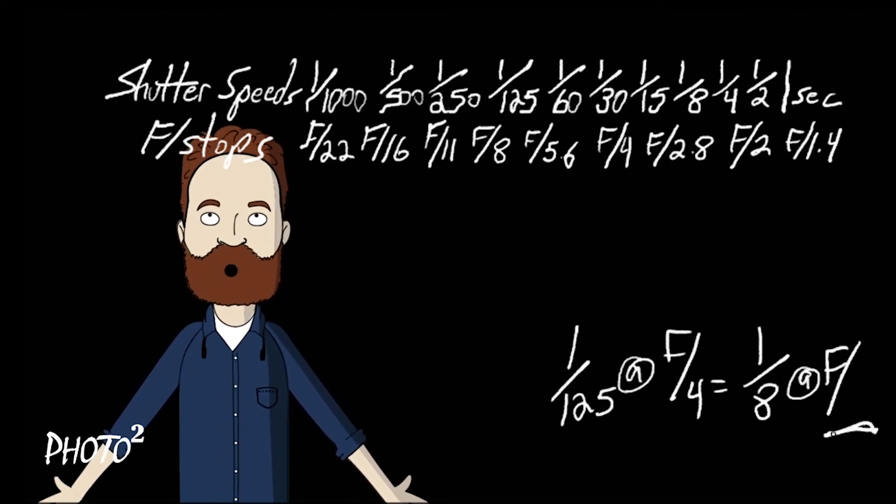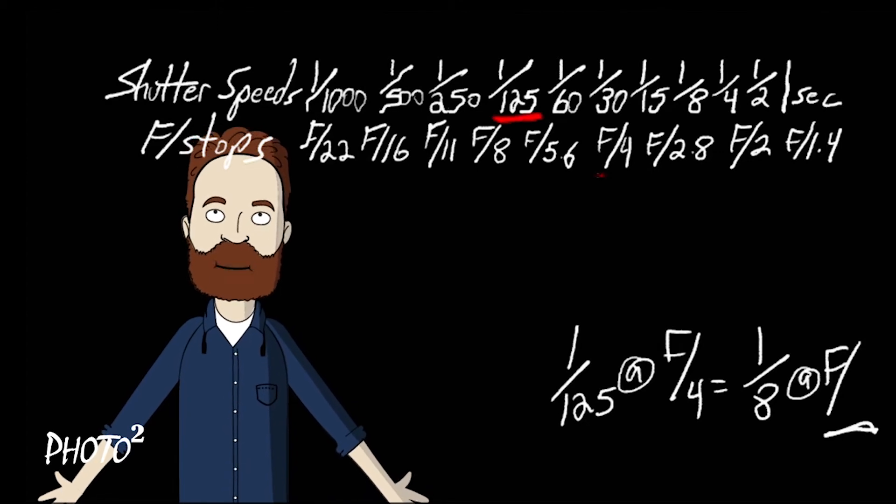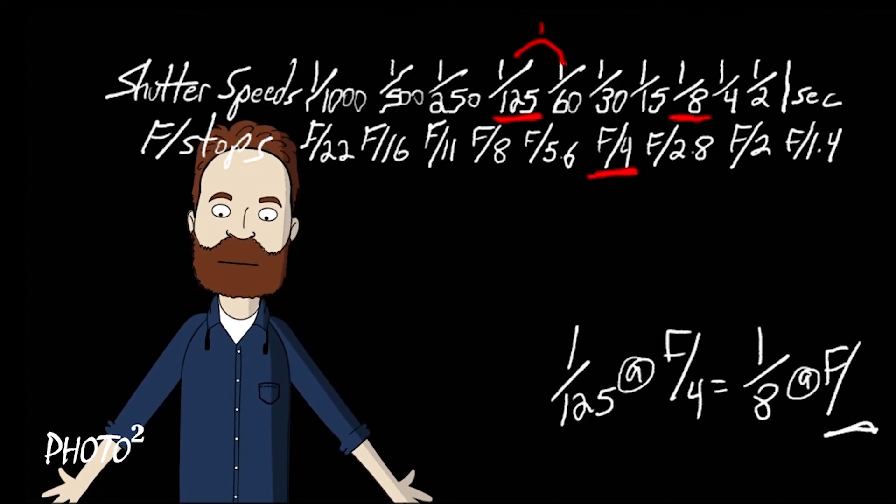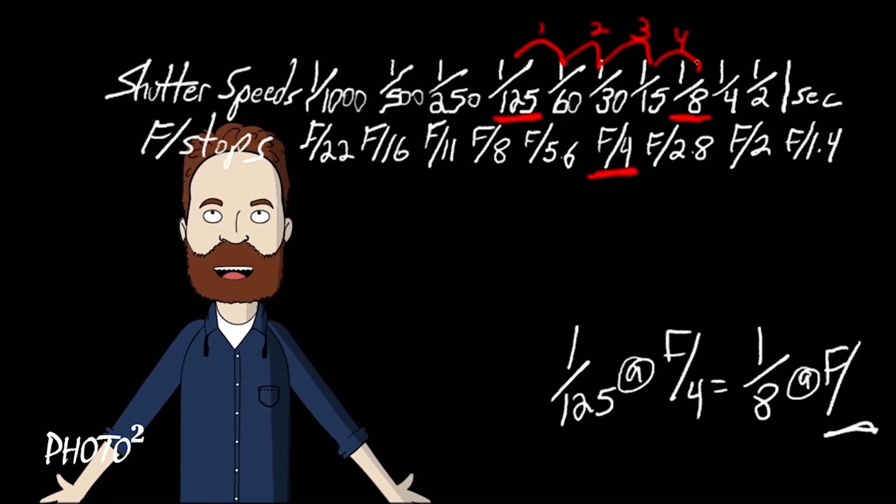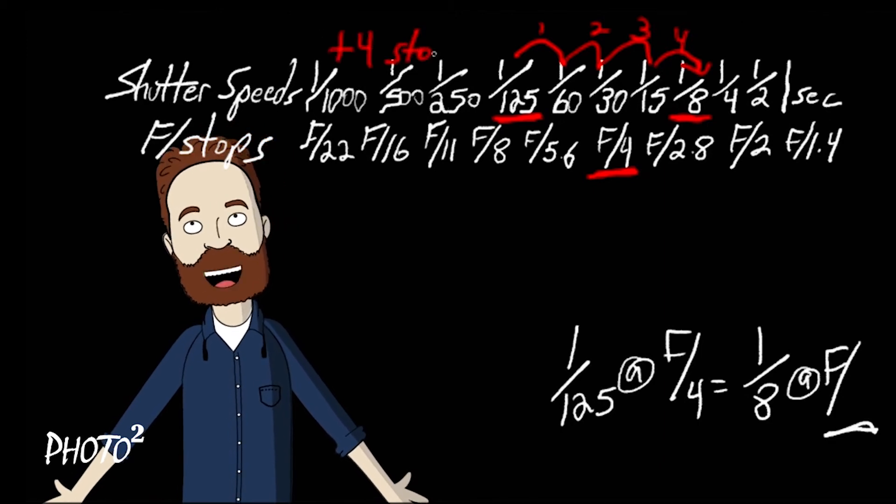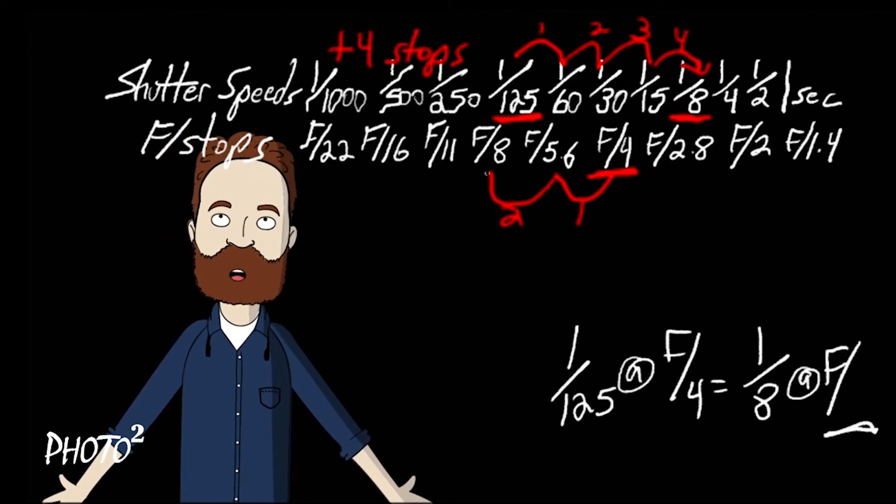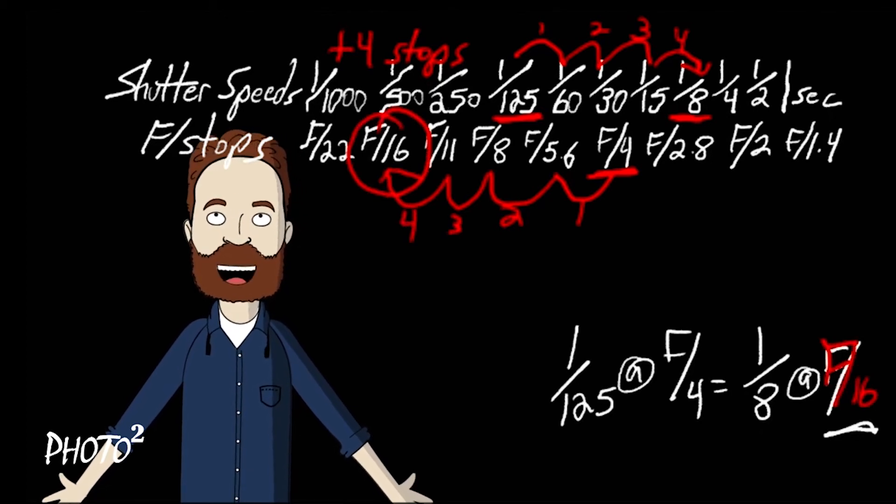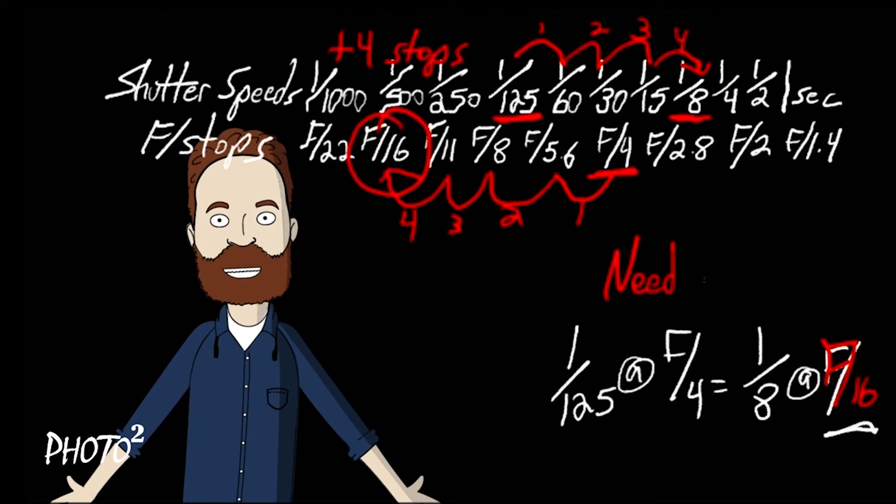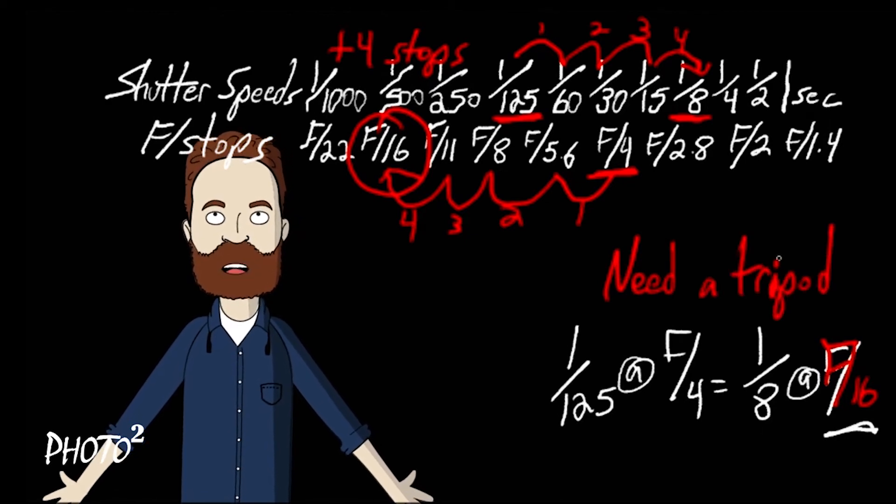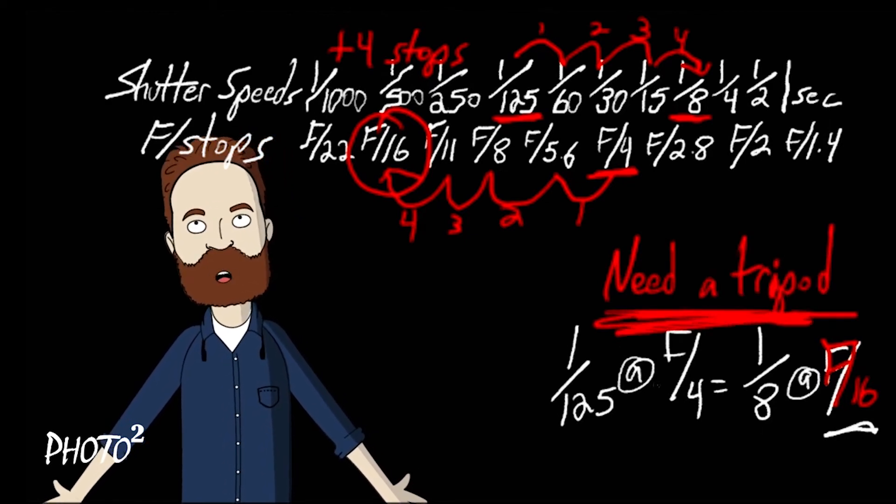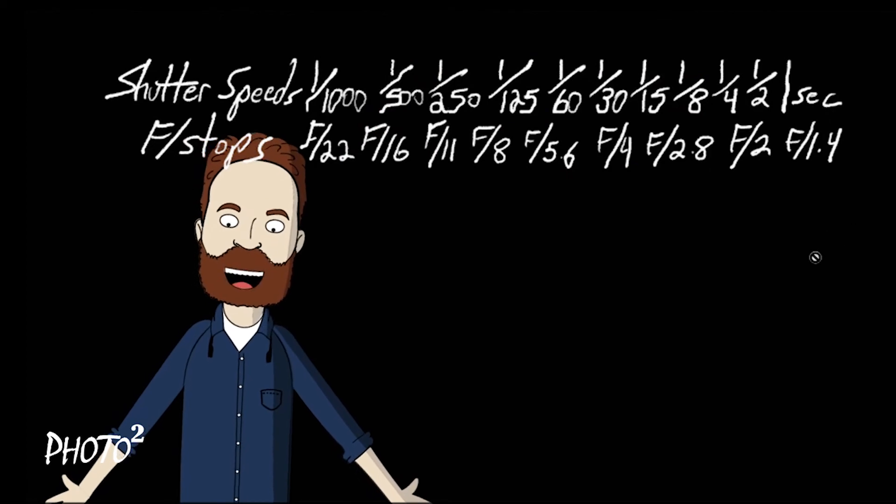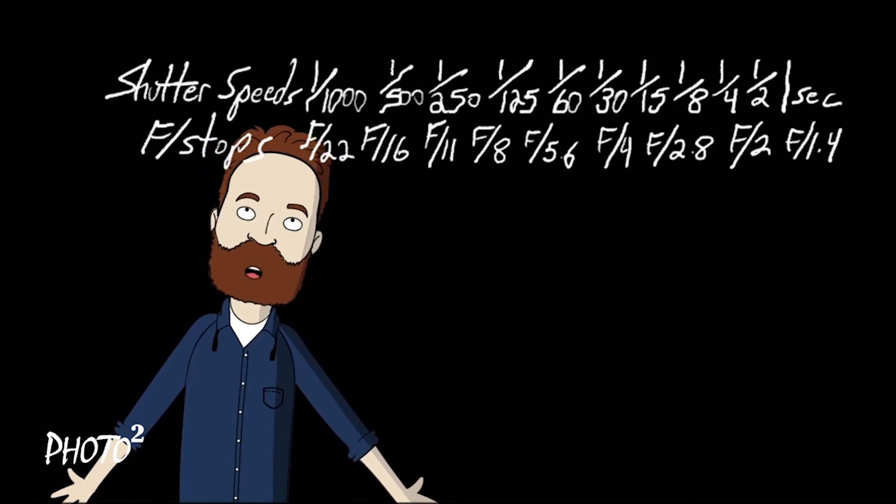So we came back later at night and we metered one twenty-fifth at f/4. So to get a control blur we wanted to go to one eighth at f what? Count them out, we get a total of four stops towards more light, and so we'll go down the f-stop scale and we'll go one, two, three, four stops towards less light. So one eighth at f/16 is the exact same exposure as one twenty-fifth at f/4, but the first shot has frozen shallow depth of field and the second shot had either a control blur or pan with a lot of depth of field.